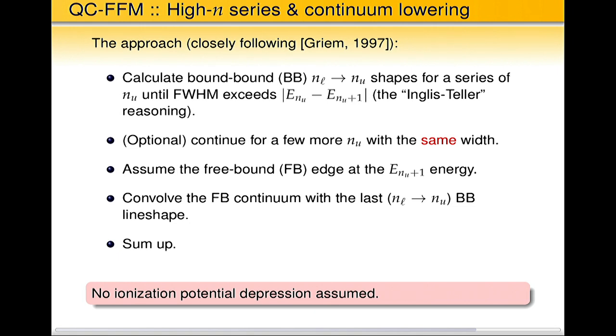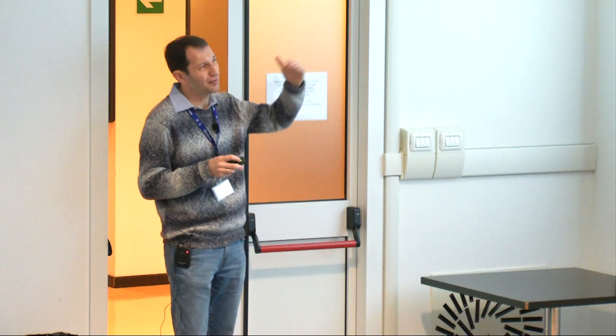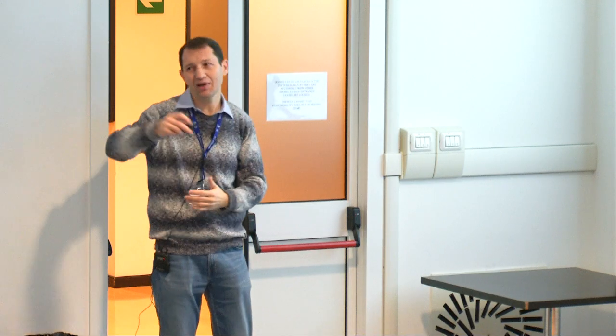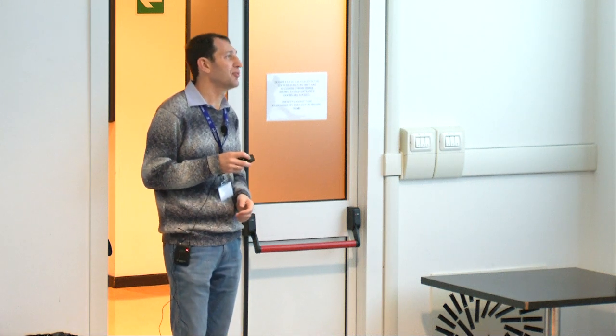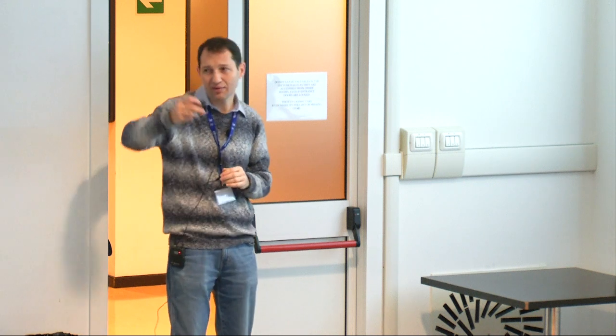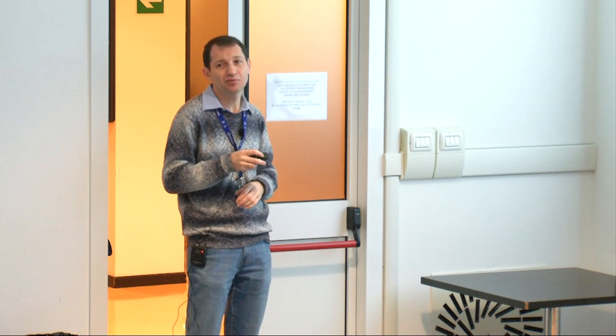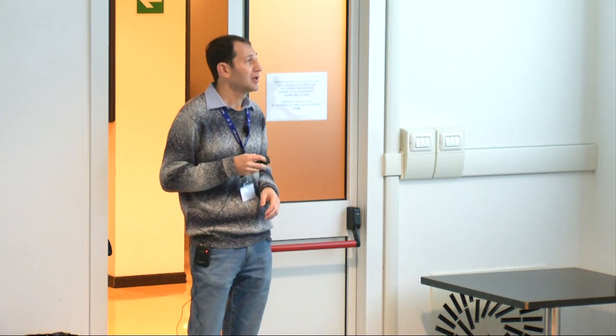So to do, let's calculate bound bound spectrum for a series. We want to calculate it for a series and continue up to the some principal quantum number at which the broadening of that line will be comparable to the distance between the neighbor levels. And that's the reason behind the Inglis-Teller effect, Inglis-Teller criterion that you've heard already a few times before. And we may continue actually for a few more principal quantum numbers just to make sure we have a smooth transition. And we will assume free bound edge at the deposition of the last member of the series at which we stop.